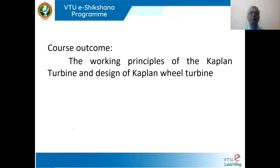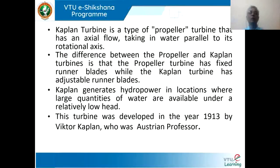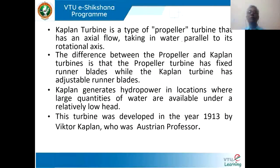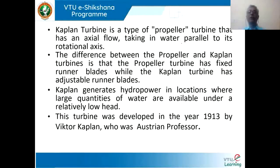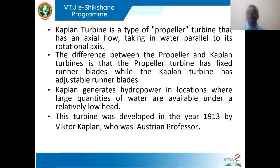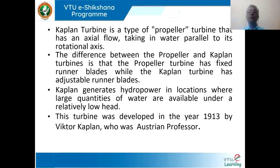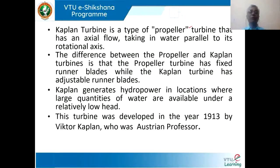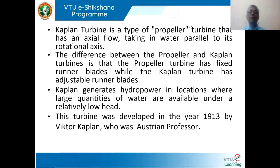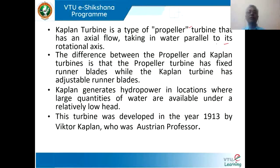After going through this topic, you will be understanding about the working principle of the Kaplan turbine and the design of the Kaplan wheel. We have already discussed what a Kaplan turbine is. Kaplan turbine is a low-head turbine, and because it is a low-head turbine, it requires a large quantity of water, which we have already understood in the classification of turbines. Kaplan turbine is one type of propeller turbine, and it is an axial flow turbine, taking water parallel to its rotational axis.